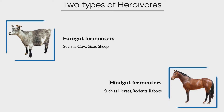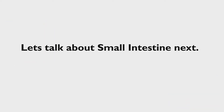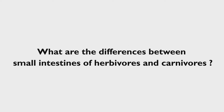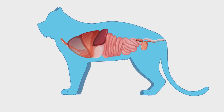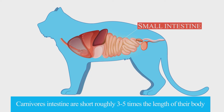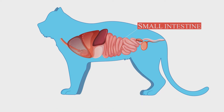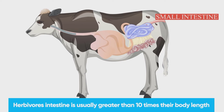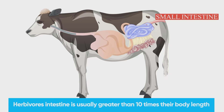These are some of the differences in the stomach of herbivores and carnivores. Now let's move to the small intestine. Carnivores' intestines are short, roughly three to five times the length of their body, as meat is relatively easily digested and absorbed. Whereas herbivores' intestine is very long, usually greater than ten times their body length, as they need a long intestine to allow time and space for nutrient absorption.